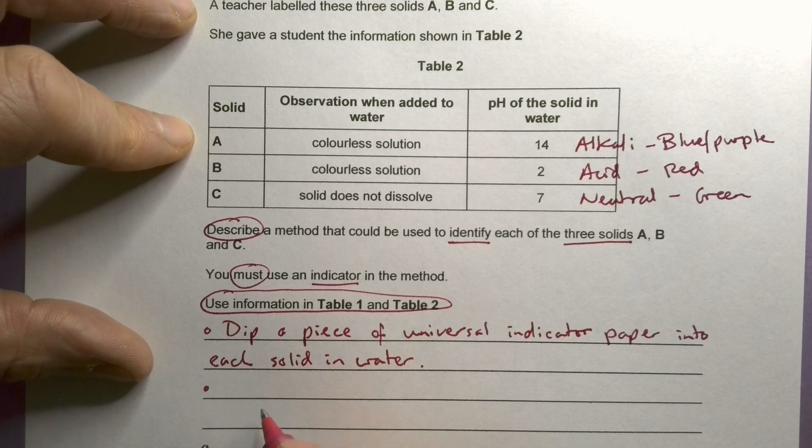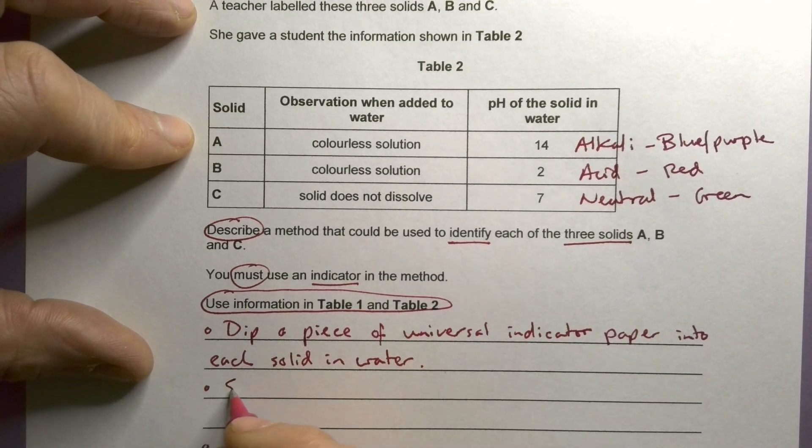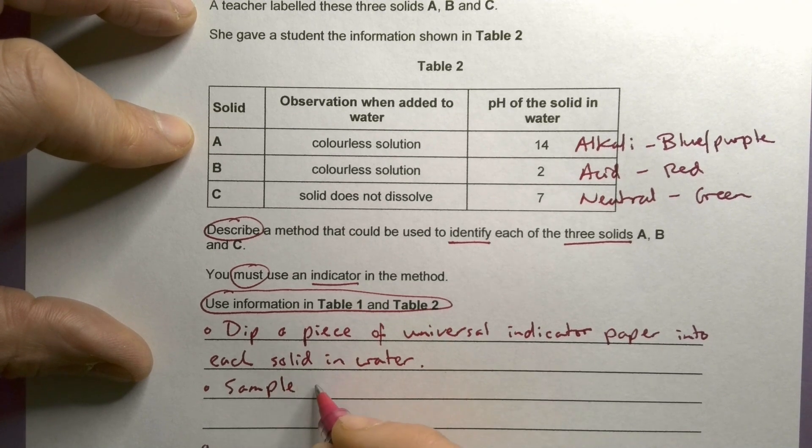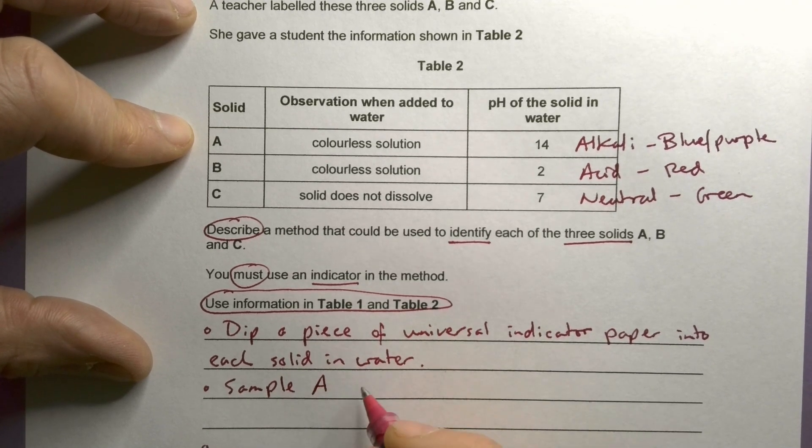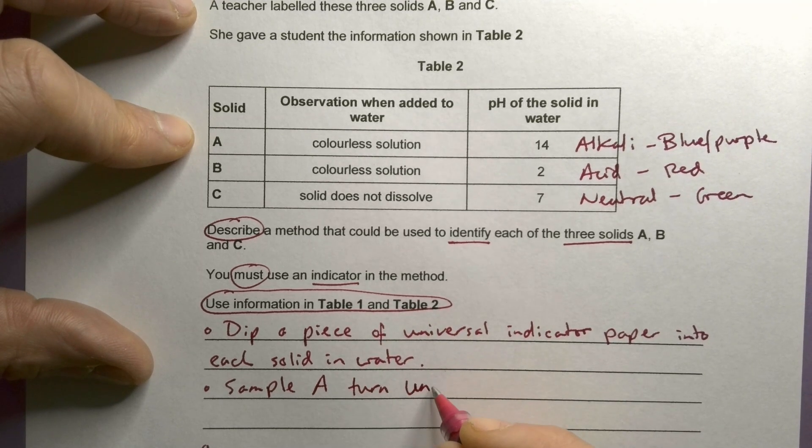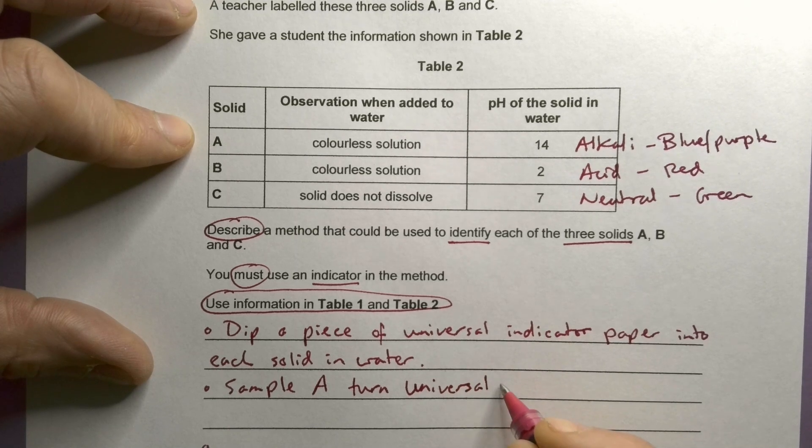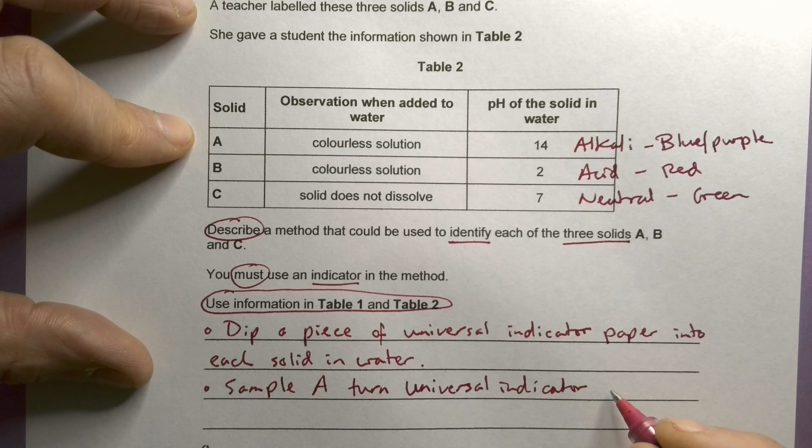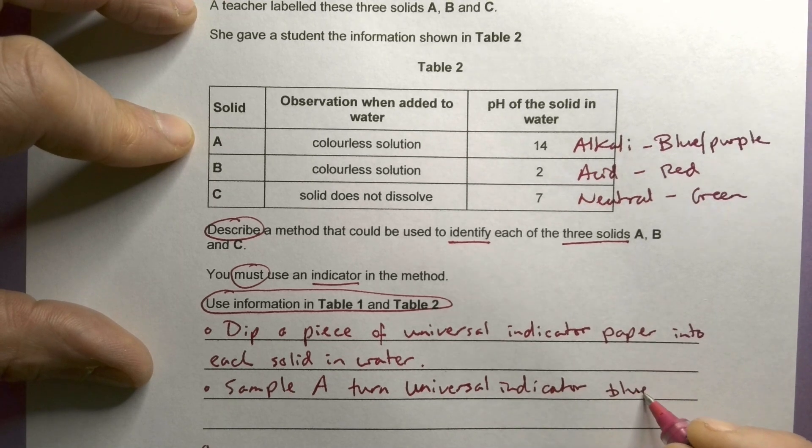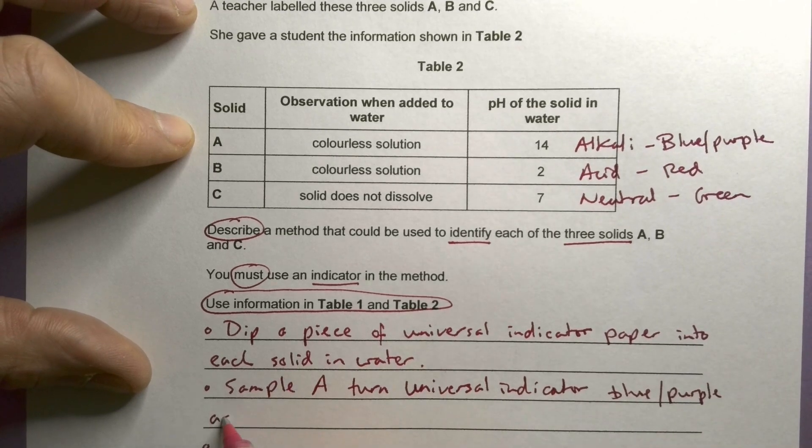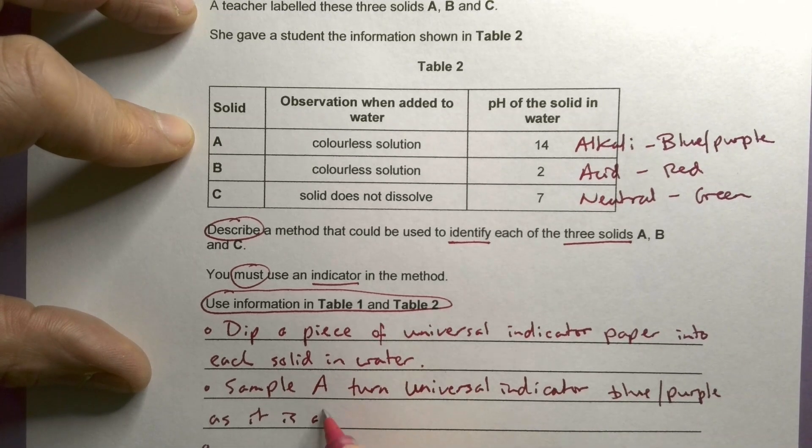So sample A, oh, sorry, solid A. Sample A will turn universal indicator blue or purple as it is alkali.